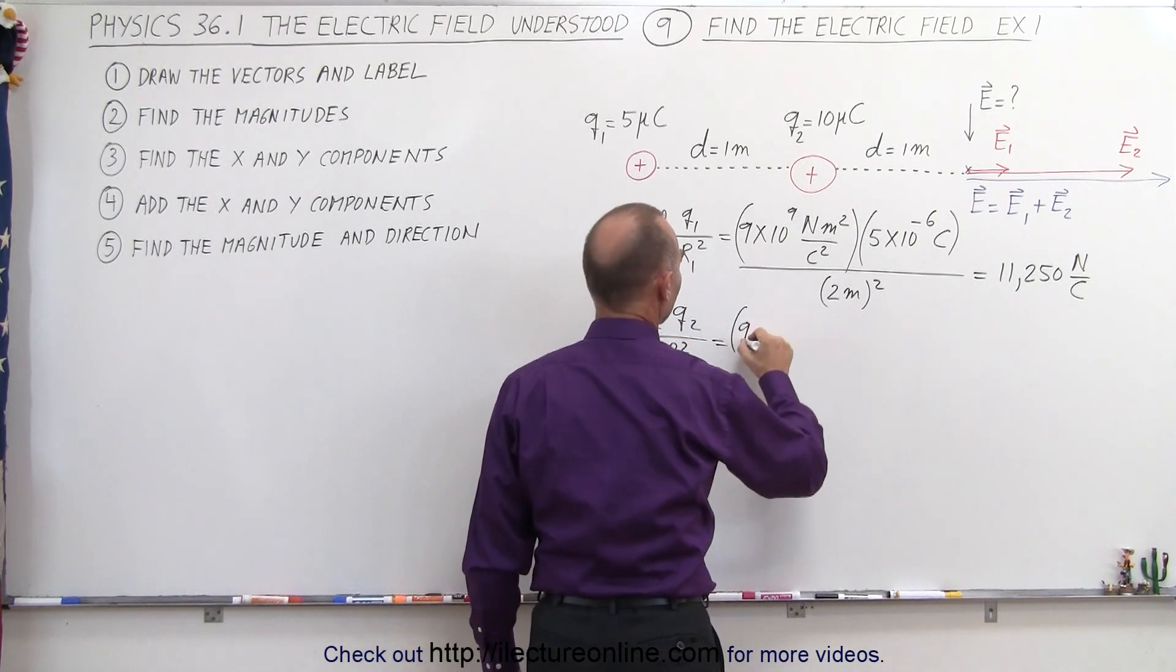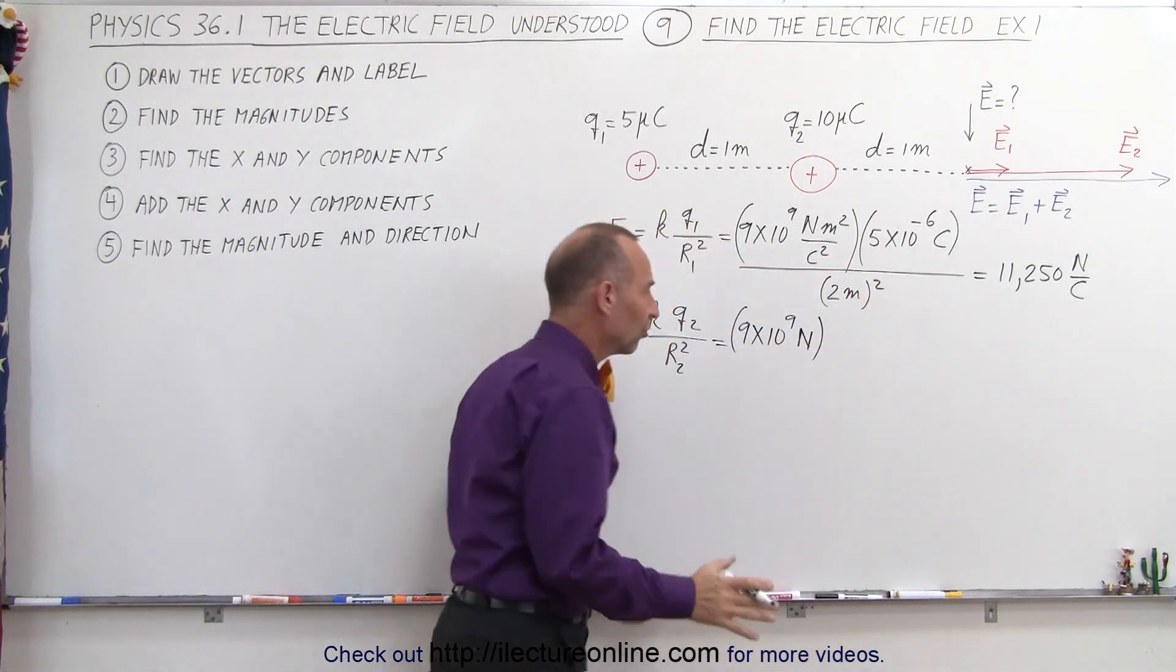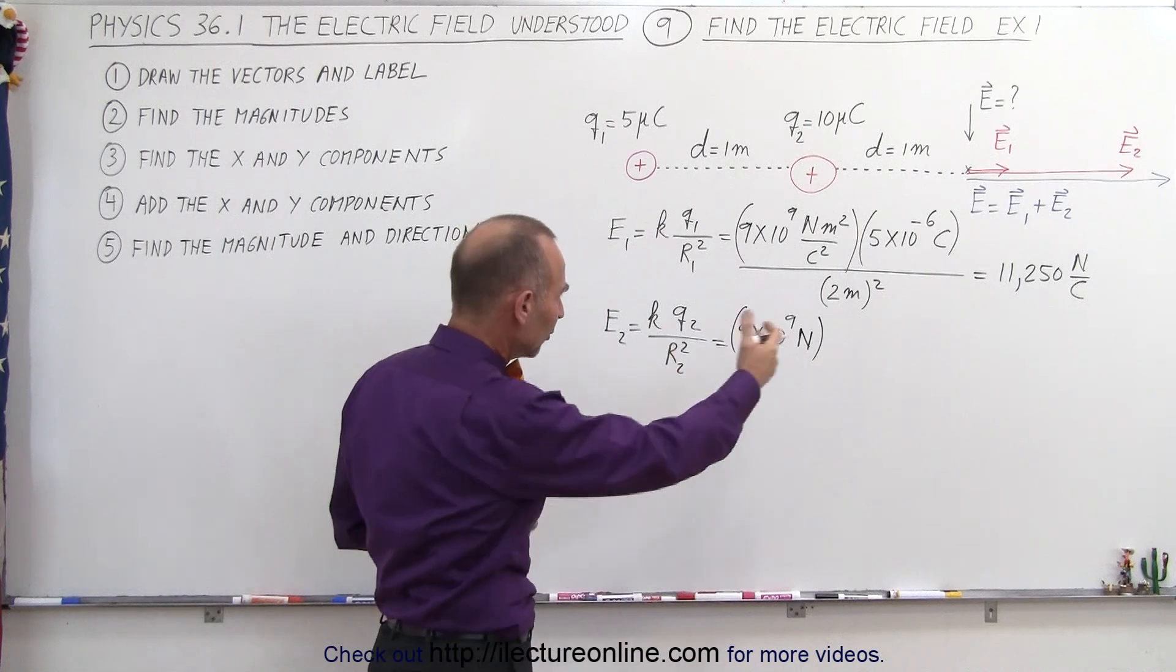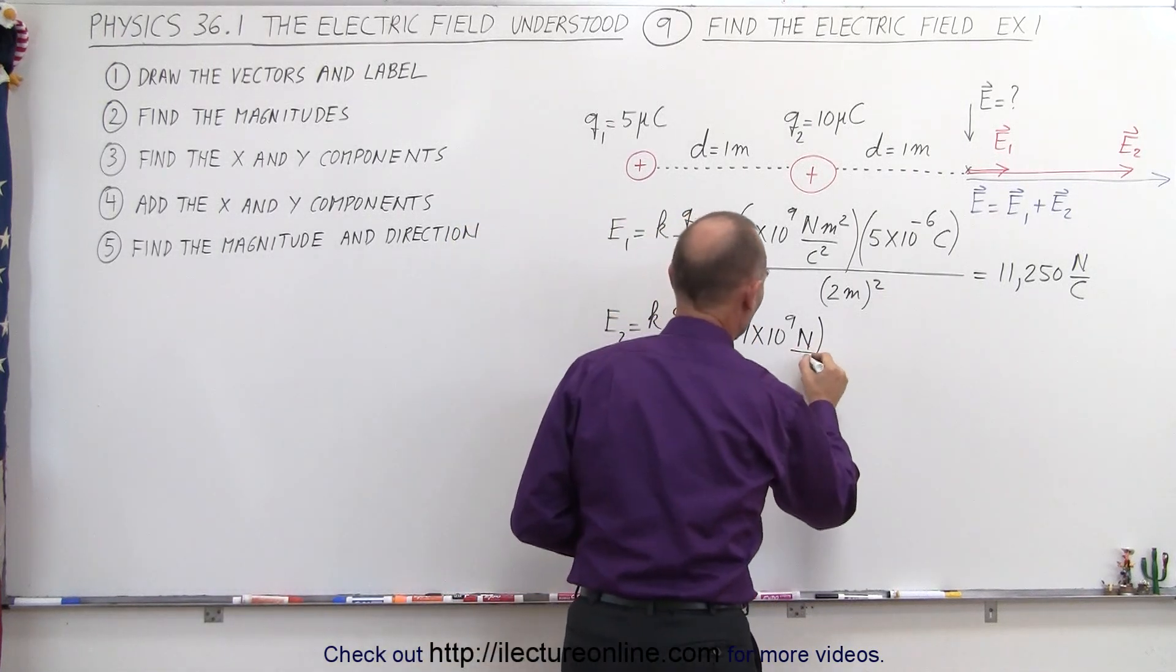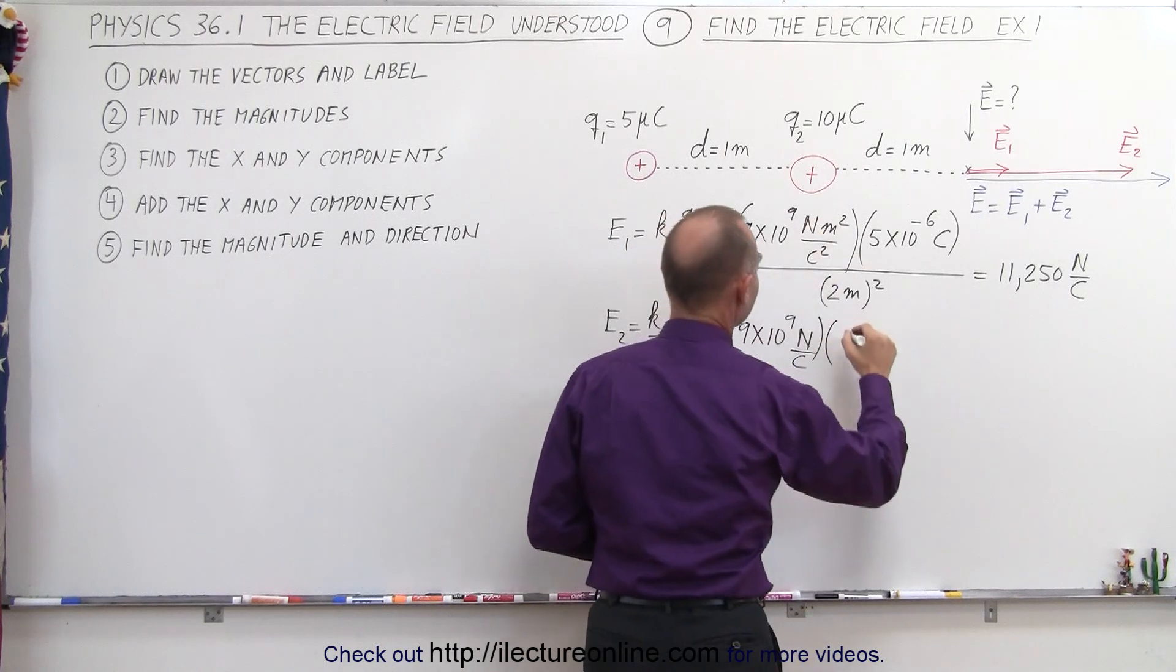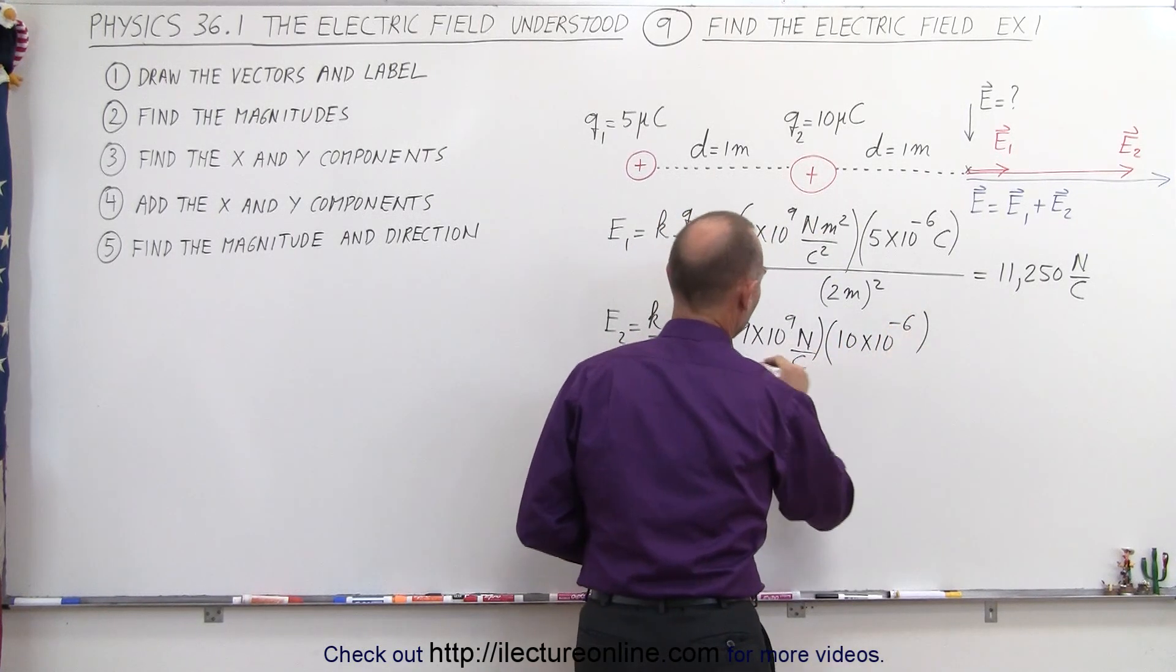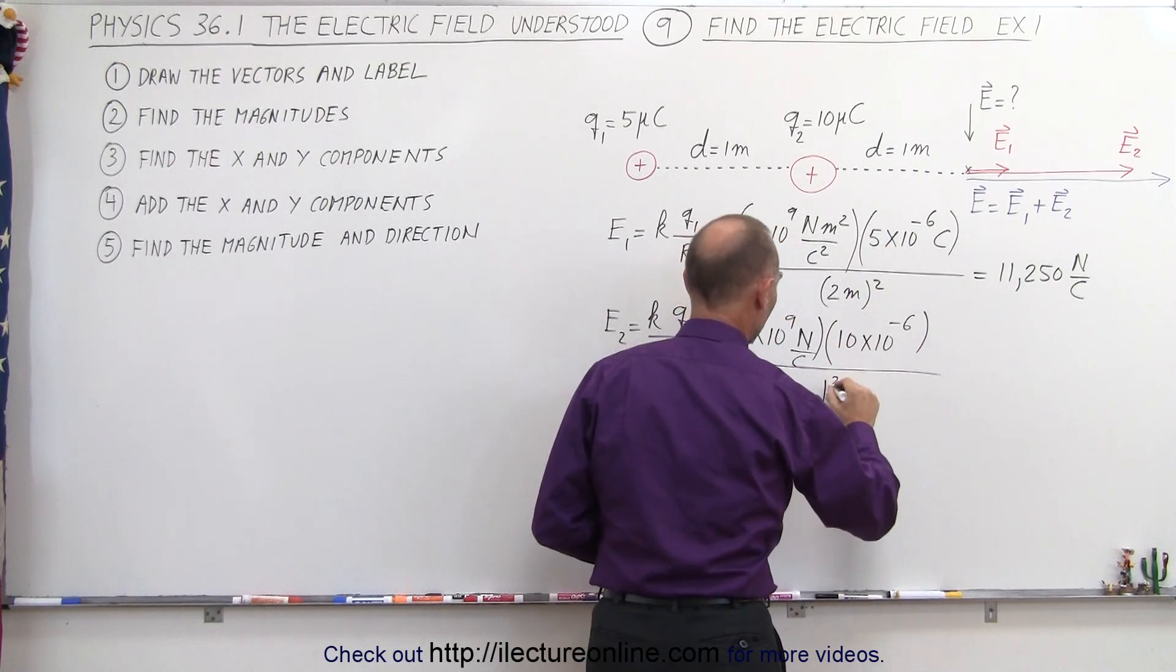So again we have 9 times 10 to the 9th newtons. Now I'm going to leave off the units so you can see that it's a lot cleaner. Your answer is going to be newtons per coulomb. The charge here is going to be 10 microcoulombs...